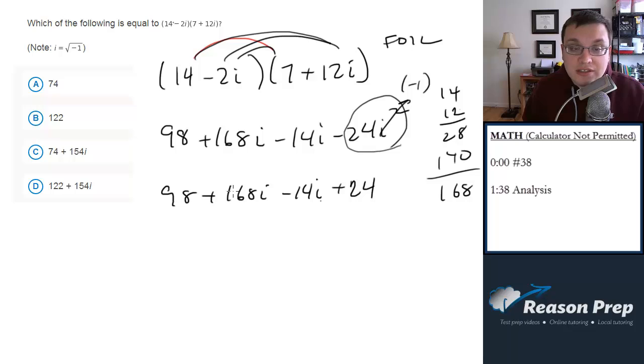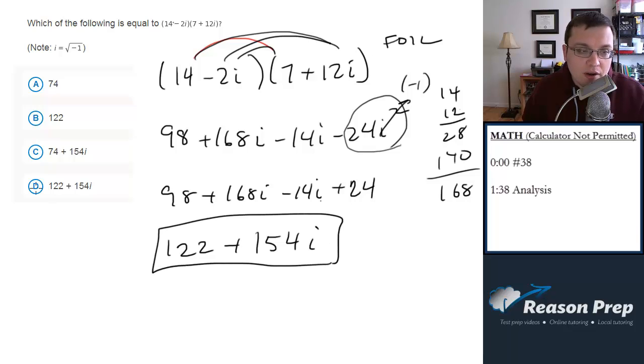And now let me combine like terms. Things without an i, I can combine. And things with an i, I can combine. So 98 plus 24 is 122. 168i minus 14i is 154i. So here's my final answer. That's choice D.